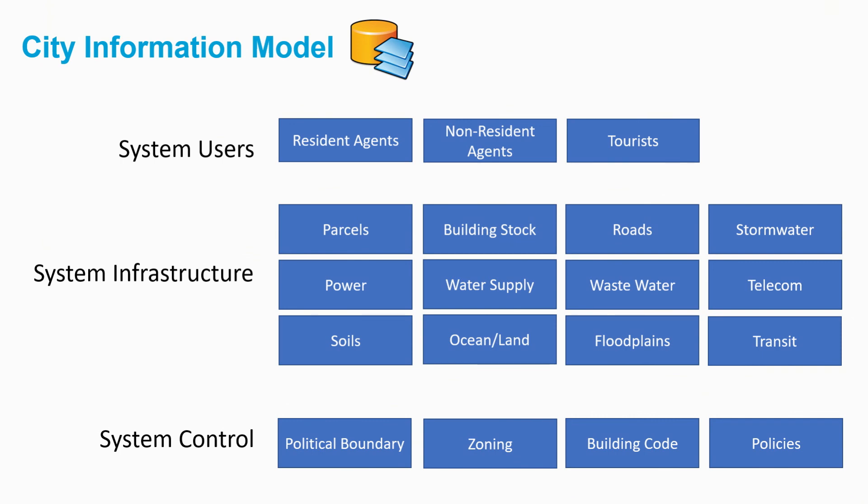Then we have to look at system control — carrot and stick. In terms of stick: zoning controls, permitting, all those processes. And then in terms of carrot: incentivizing flood protection, for example — those kinds of policies that make the city more resilient through incentivization.